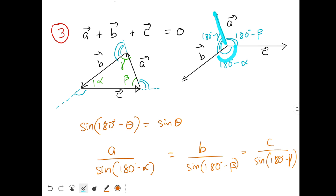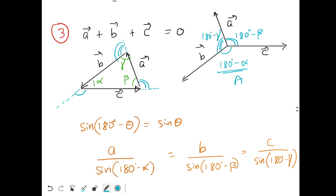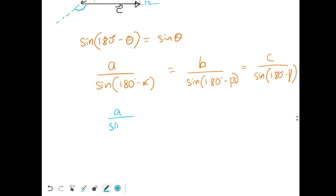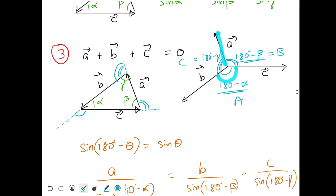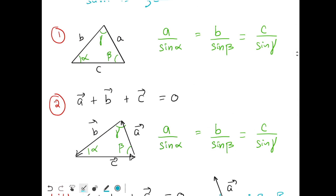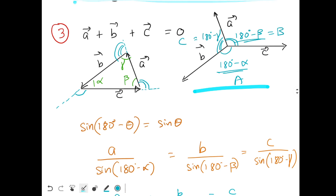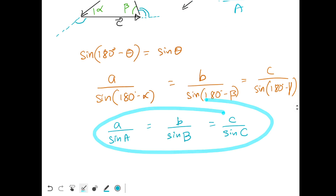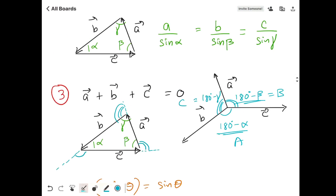Naming the angles in the tail-to-tail diagram as capital A, capital B, and capital C, we can write a/sin A = b/sin B = c/sin C — that is, each vector magnitude divided by the sine of the angle opposite to it. These are the three ways of writing Lamy's theorem: for a triangle, for vectors head-to-tail, and for vectors tail-to-tail.